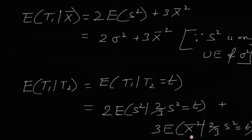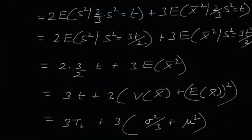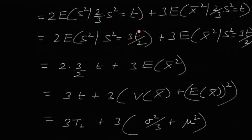For the first term: if (2/3)S² = T, then S² = 3T/2. So E[S² | S² = 3T/2] = 3T/2, and with the factor of 2 outside, this gives 2·(3T/2) = 3T.